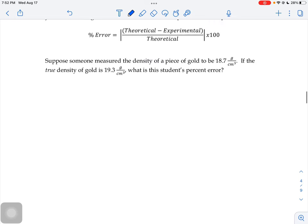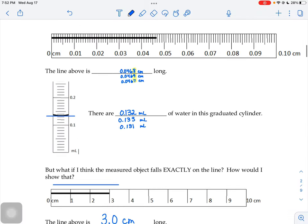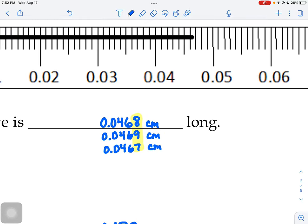If I scroll back to the notes we were working on just yesterday, we were talking about making a measurement, and we said every measurement you make should have one guessed digit that you can see we highlighted here in yellow, and then a unit as well.